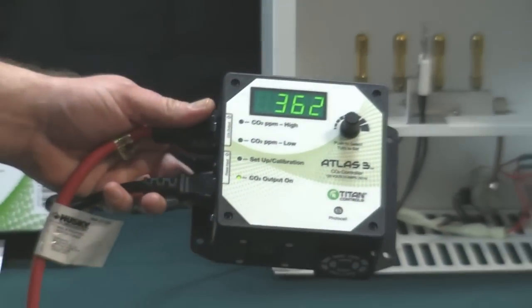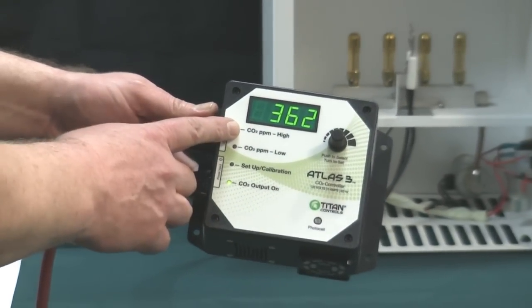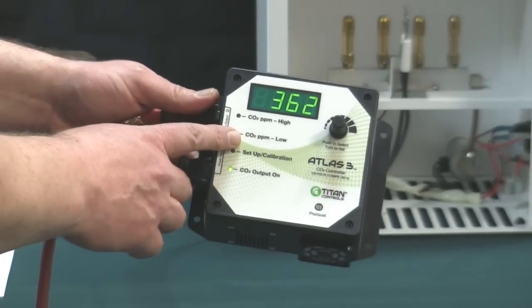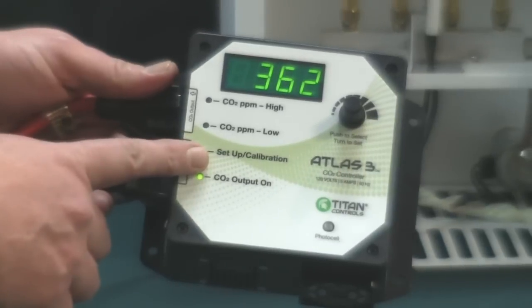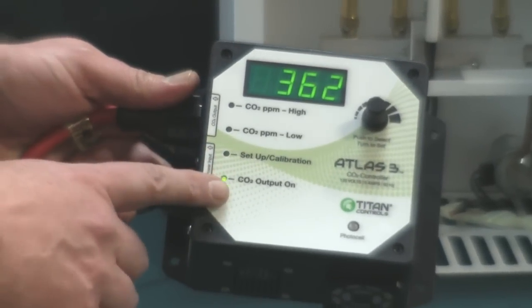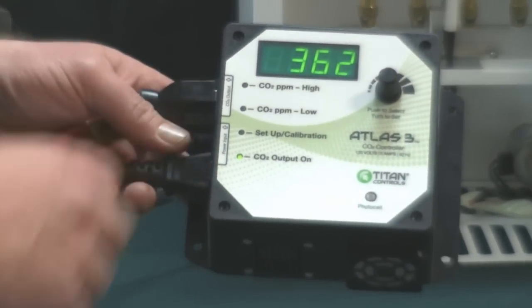The Atlas III has a high parts per million setting, a low parts per million setting, this is known as a hysteresis, it has a setup and calibration feature, and as you can see, it has a light to tell you when your CO2 output is on.